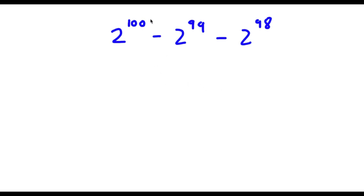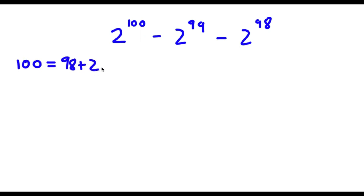Alright, so I have 2 to the power of 100 minus 2 to the power of 99 minus 2 to the power of 98. First off, 100 is the same thing as 98 plus 2, 99 is the same thing as 98 plus 1, and 98 is the same thing as 98.